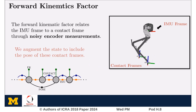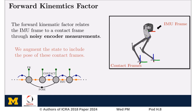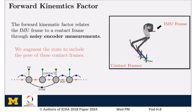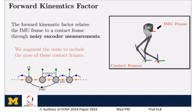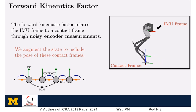The forward kinematic factor relates the IMU frame to a contact frame through noisy encoder measurements. To implement this unary factor, we augmented the state to include the pose of each contact frame. However, this alone does not tell us any additional information about the motion of the IMU frame.